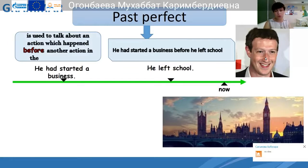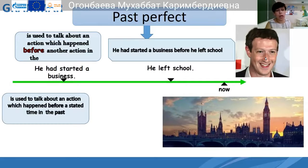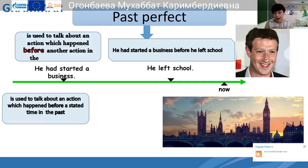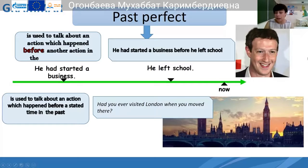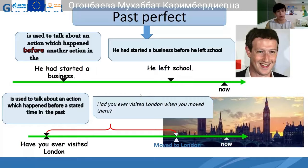Also, past perfect is used to talk about an action which happened before a stated time in the past. For example: 'Had you ever visited London before you moved to London?' For these terms we use words such as 'when,' 'by,' 'until,' 'before' — to show that the action took place before the action in the past simple.